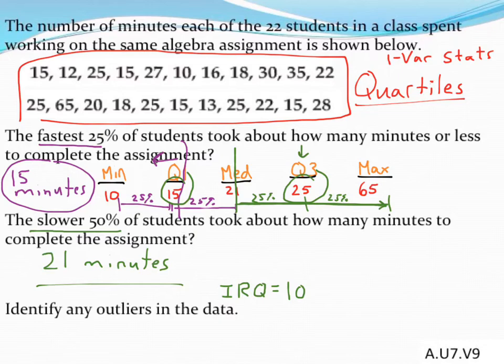To identify outliers, I'm going to take my Q1 value (15) and subtract 1.5 times that interquartile range. If I do this, I end up with zero again. So basically, if I had any students finish this assignment faster than zero minutes, there would be an outlier.